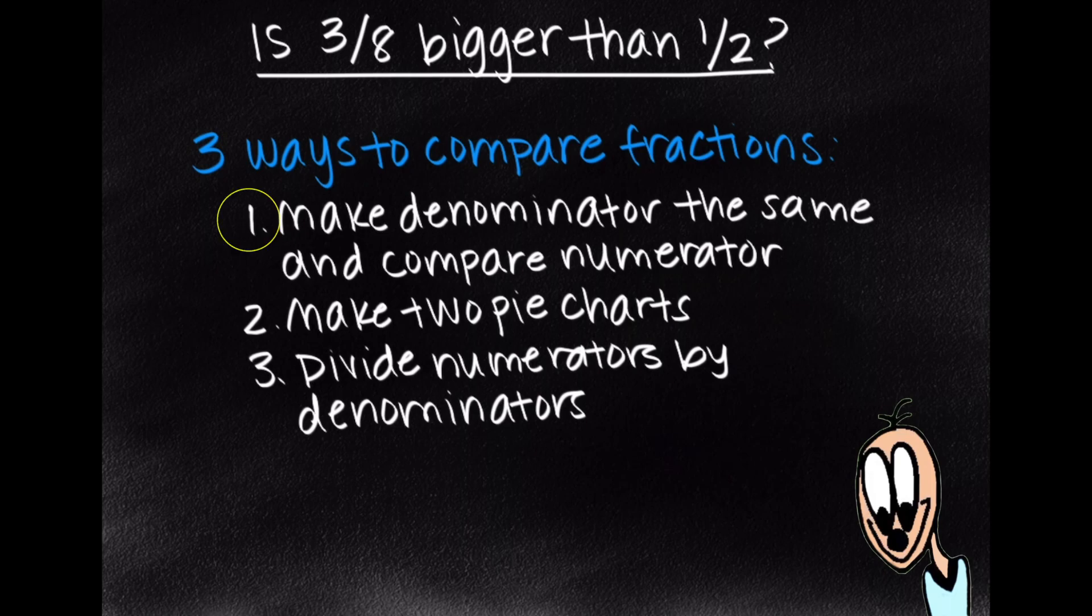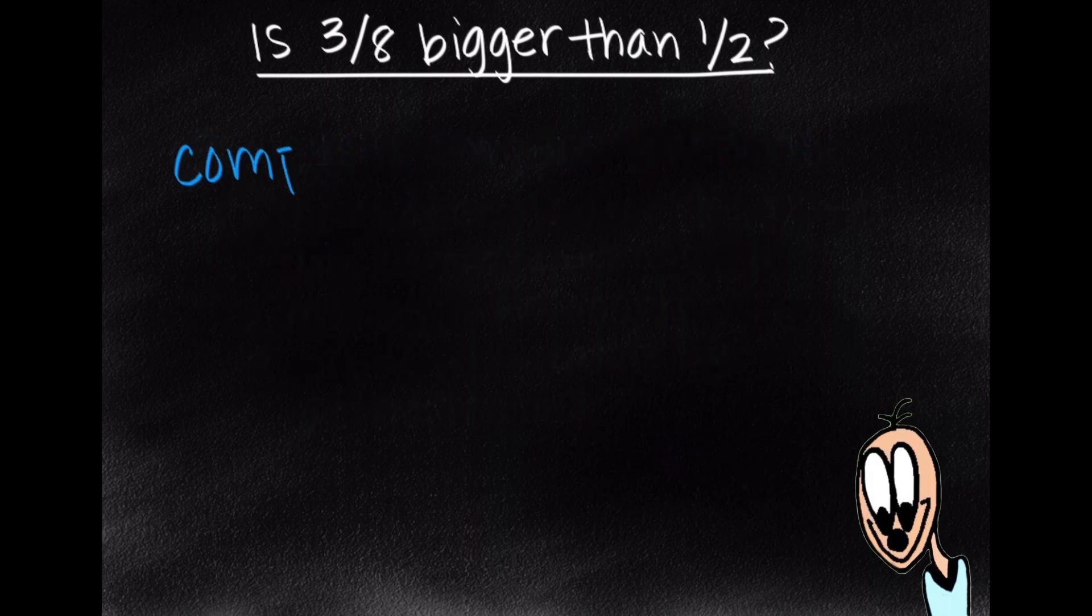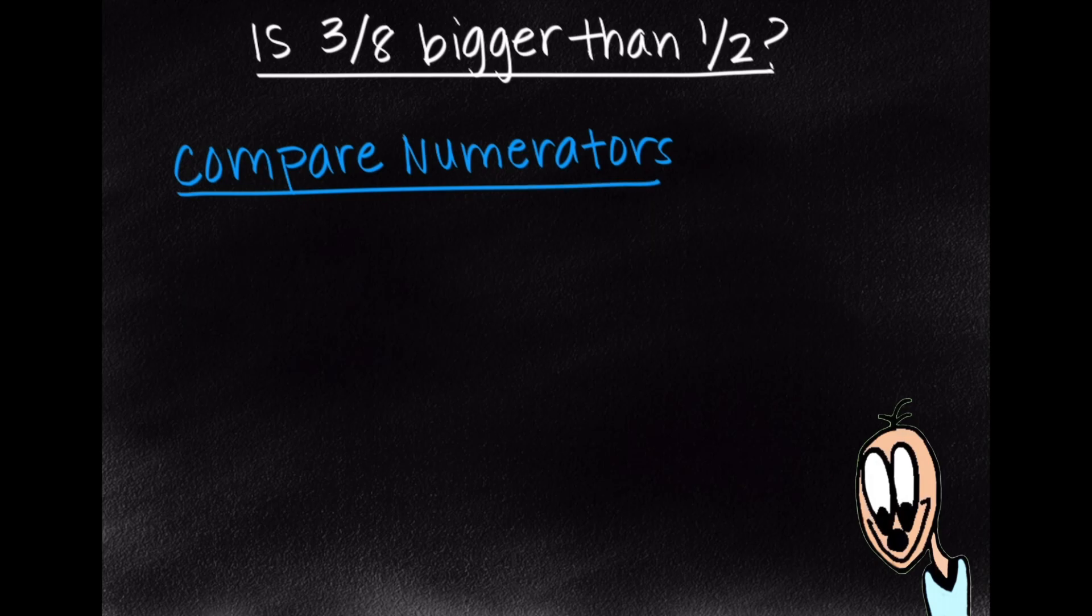So let's start with the first method, which is making the denominators the same and then comparing the numerators. So we've got 3 eighths and 1 half, and we need to make the denominators the same. So the easiest way to do this is by multiplying the numerator and denominator of 1 half by 4. So we're going to do 1 times 4 and 2 times 4, which gives us 4 eighths.